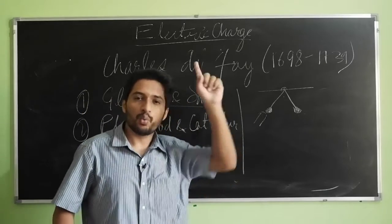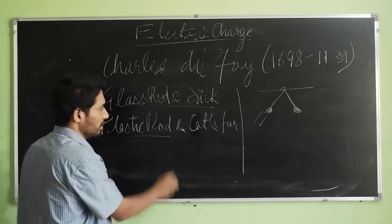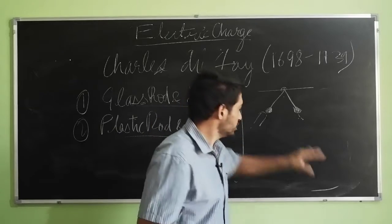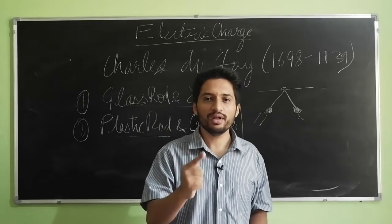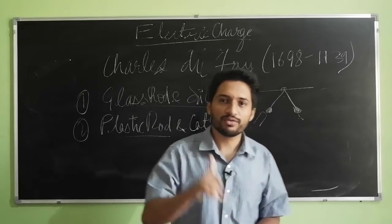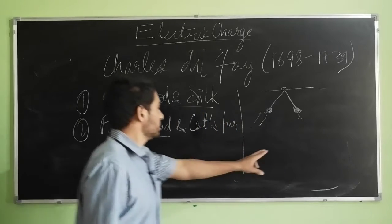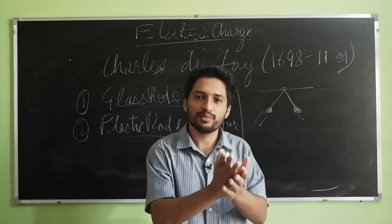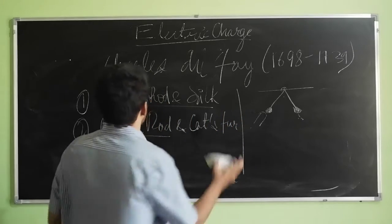He then took a plastic rod on one ball and a glass rod on the other — two different charges — and those two balls attracted each other. From this he concluded: there are two kinds of charges, same charges repel each other, and different charges attract each other. Note that Dufay did not use the terms positive and negative — he just said there are two different kinds of electricity, same repels, and unlike attracts.